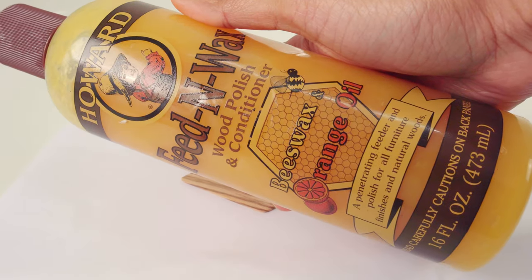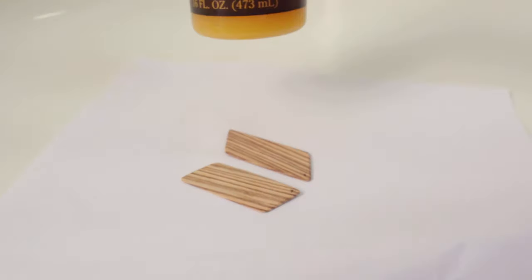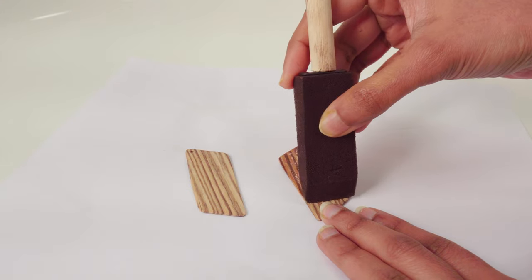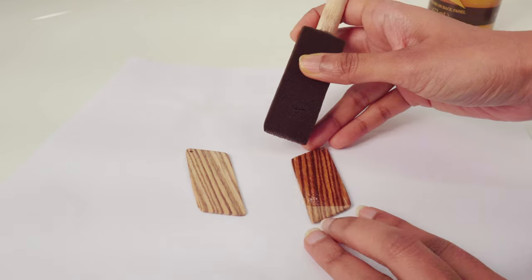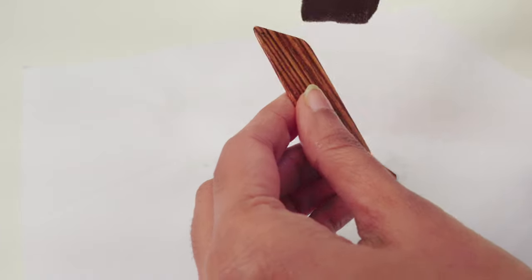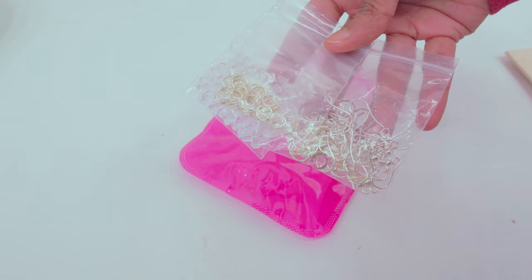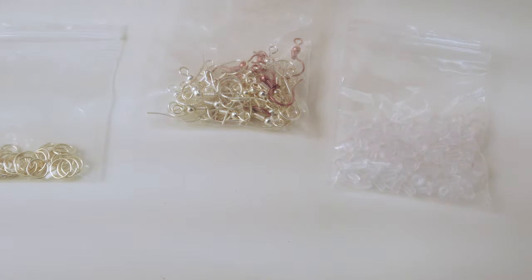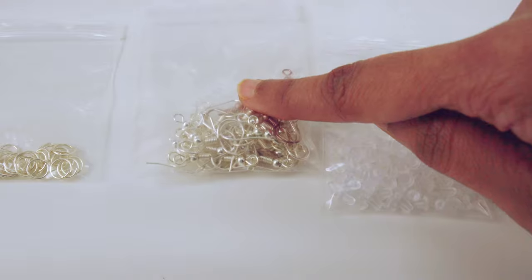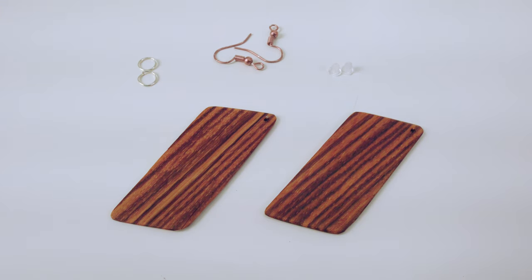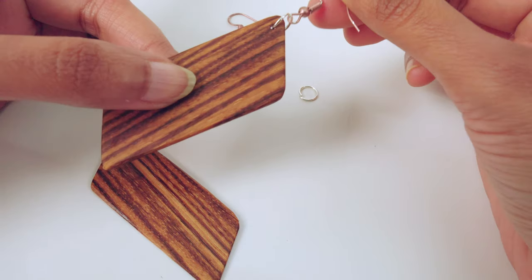Finally, finish with a clear sealer. I used two coats of orange oil feed and wax and let them dry. This is the earring kit I bought from Amazon. It comes with rings, hooks and earring bags. First, add the ring into this hole. Then add the hook and there you go.